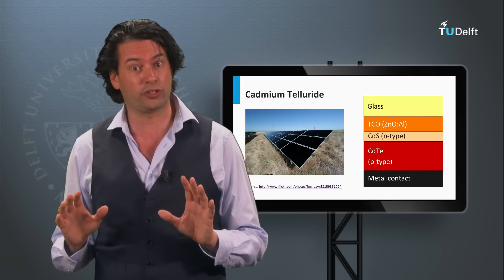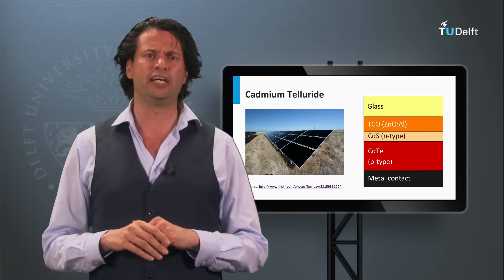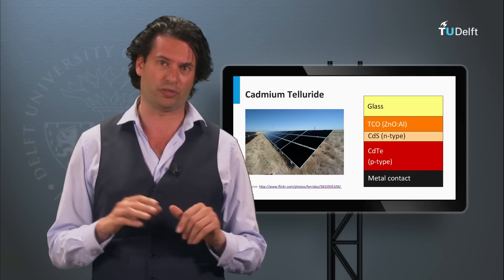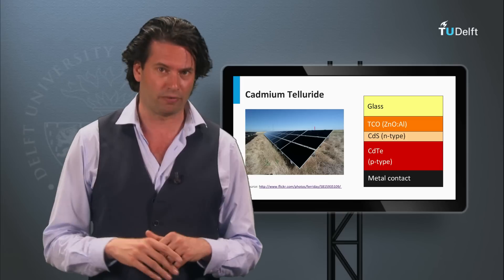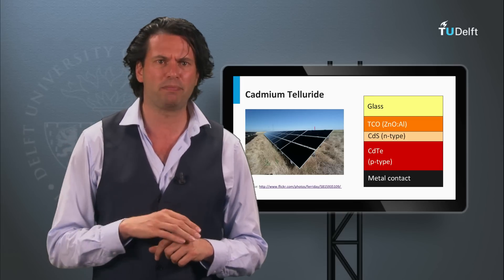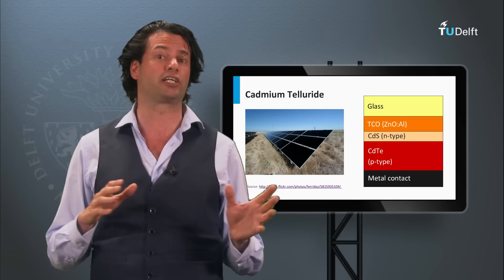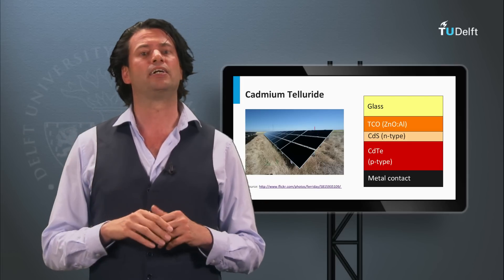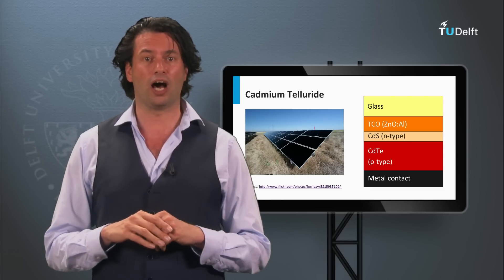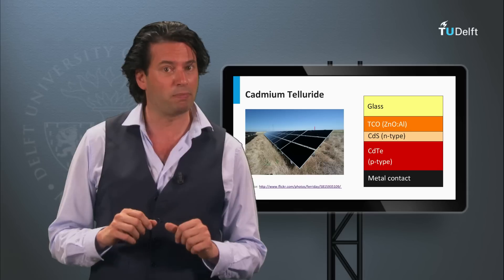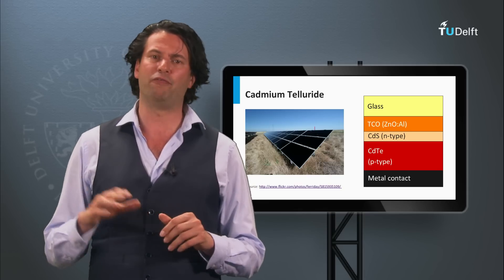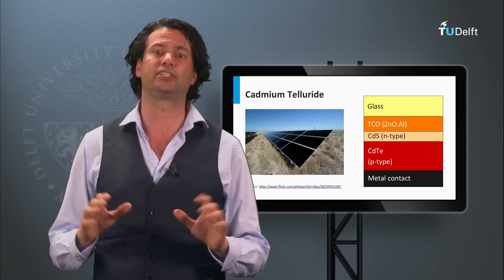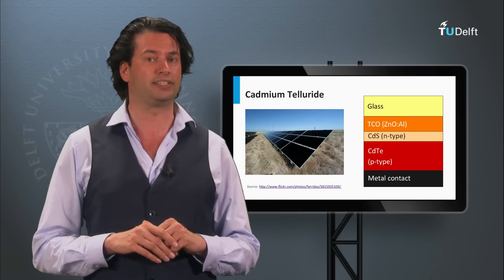An alternative thin film PV technology is based on 2-6 semiconductor, the cadmium telluride. Cadmium telluride PV technology belongs to the so-called second generation technology as well. The cadmium telluride has currently the largest market among the thin film PV technologies. In week 5 we will discuss this technology in great detail.